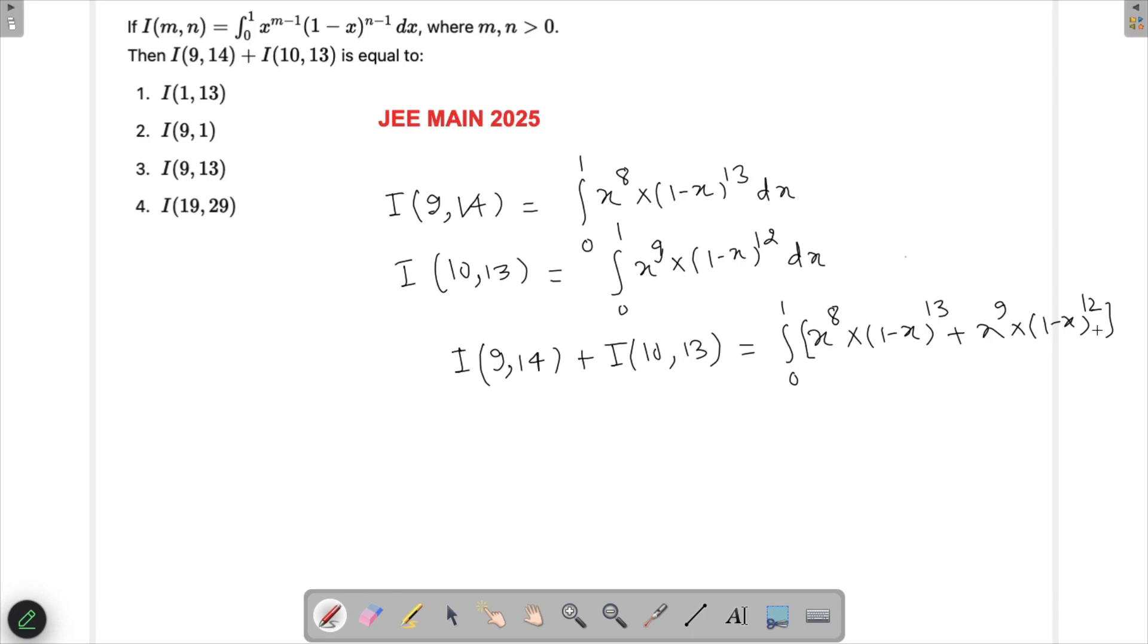Once I do this summation, I get 0 to 1, then x raised to the power 8 into 1 minus x raised to the power 12 can be taken in common. This could be simply 1 minus x left over here and then plus x left over here, and that gets cancelled out. What I'm left with is x raised to the power 8 and then into 1 minus x raised to the power 12.